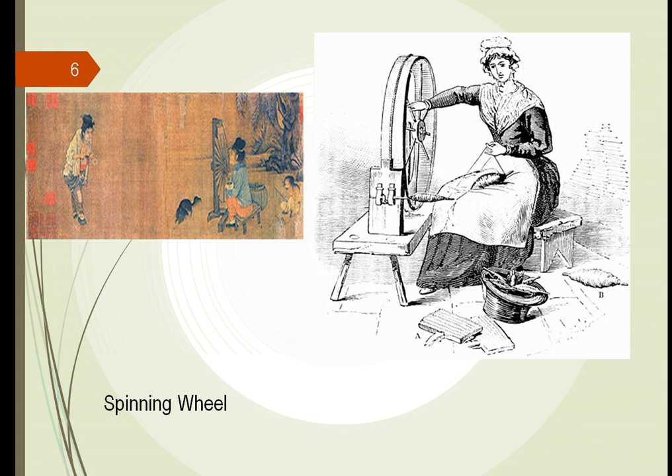The spinning wheel was invented, which allowed us to take those fibers, twist them together, and make long rolls of yarn — long rolls of string — so that they could be utilized to make other types of clothing.